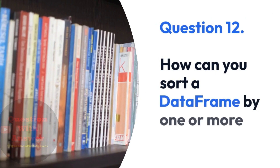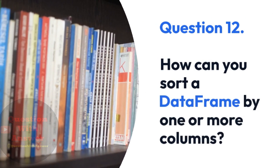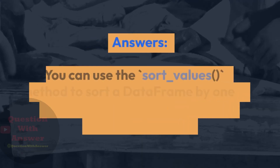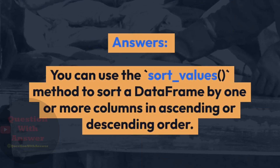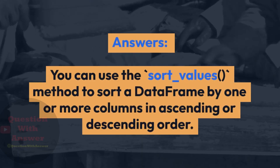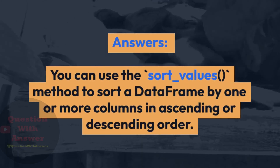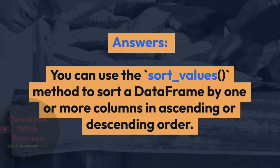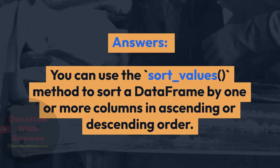Question 12: How can you sort a DataFrame by one or more columns? You can use the sort_values() method to sort a DataFrame by one or more columns in ascending or descending order.